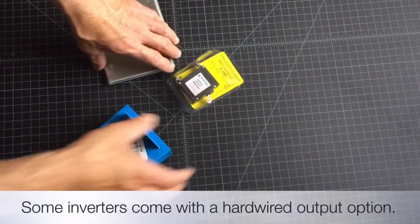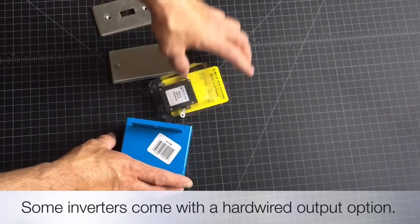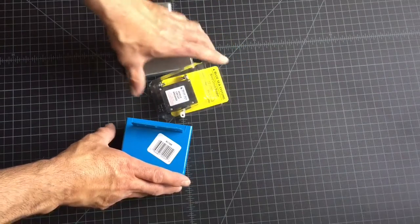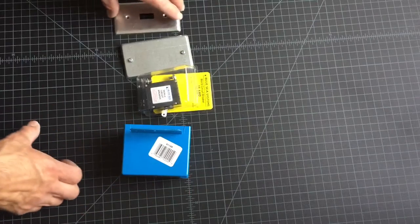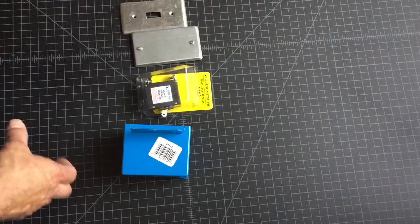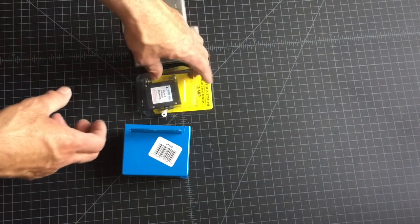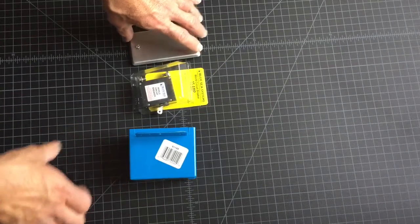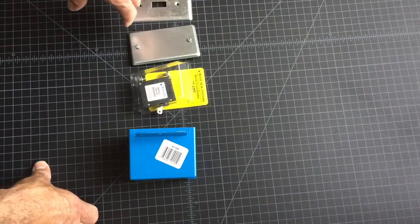When you install an inverter and if you decide to do it hardwired in, if it has a hardwired option, some don't but mine does and I wanted it that way so I can run my own wire to my outlets in my van. It requires that you have a breaker in line to protect those outlets.